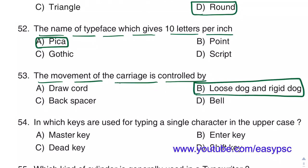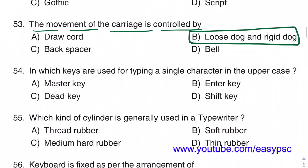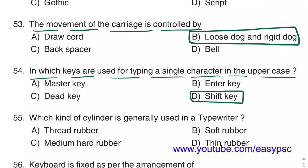Carriage movement is controlled by Loose Dog and Rigid Dog. The key used for typing a single character in uppercase is the Shift key.